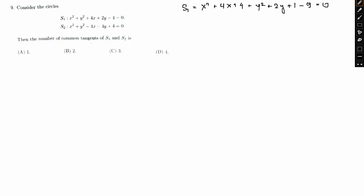So this can be further written as x plus 2 whole square plus y plus 1 whole square equal to 3 square. So here we can see center is nothing but minus 2 comma minus 1 and radius is 3 for the first circle. And now if I take a look at S2.